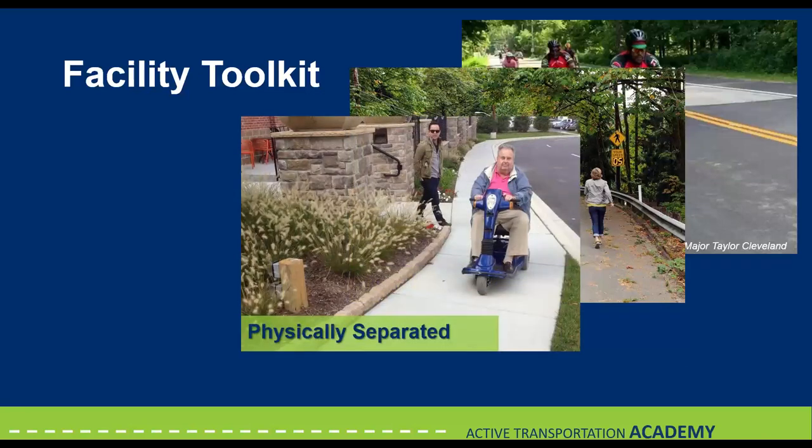Next, we have physically separated facilities. These types of facilities are still part of the roadway. Options like shared use paths provide a distinct network for active transportation users that is completely separate from the roadway. These facilities are generally much safer than the other two categories, in large part in an effort to reduce serious injuries and fatalities among active transportation users and to provide them a more comfortable experience.